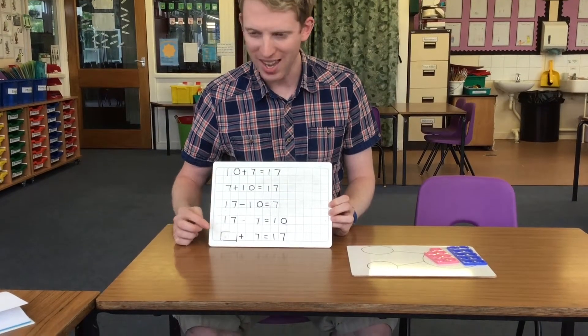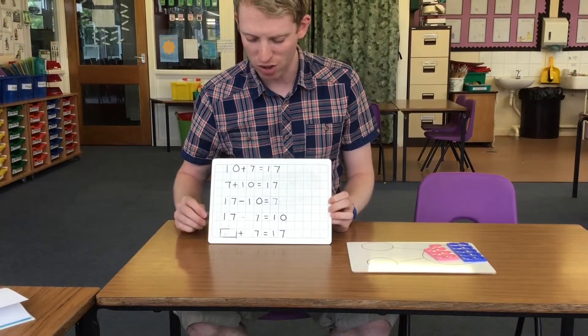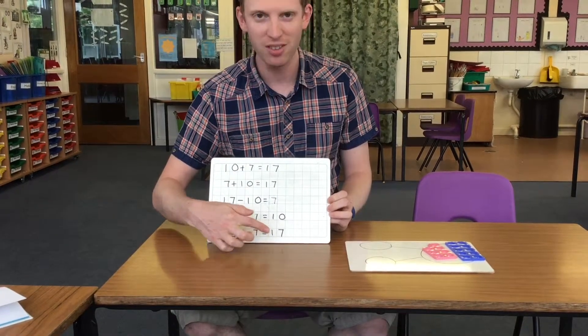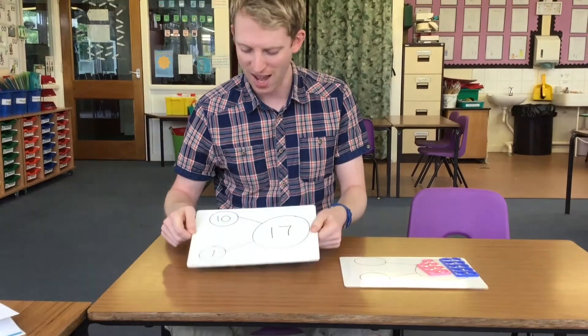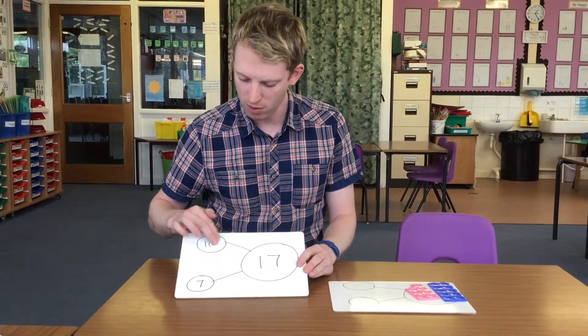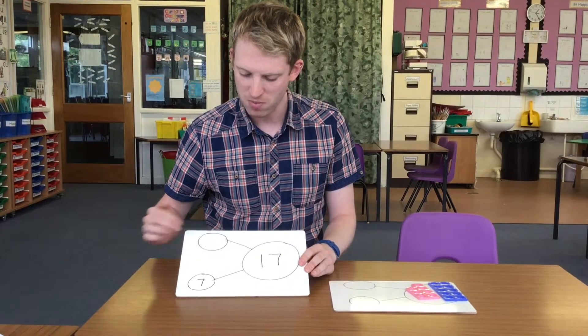And finally we get them to do some extra depth by having something add 7 equals 17. And for that we're getting them to try and see with their part-part-whole that they've got something like this where they've got to work out what goes in this part.